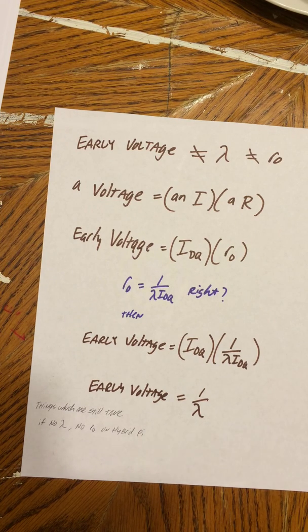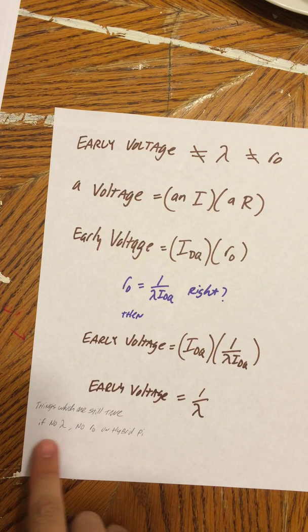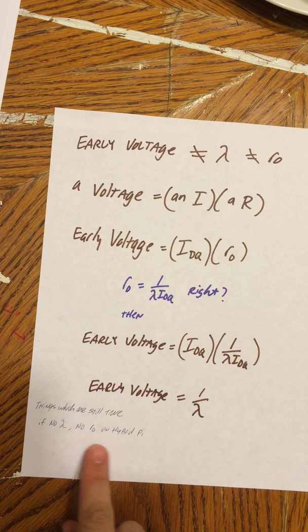Things which are still true and have nothing to do with this: If no lambda, then no RO on the hybrid pi. Why?